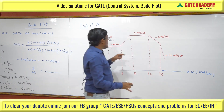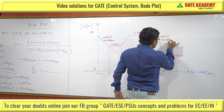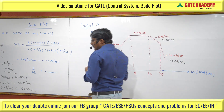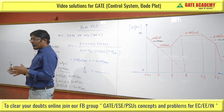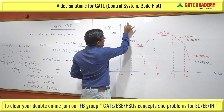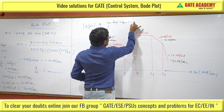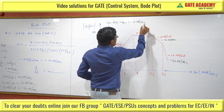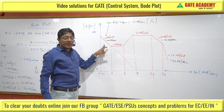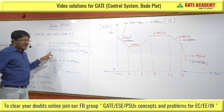So now: 0 dB per octave is flat; minus 6 dB per octave is minus 20 dB per decade; minus 12 dB per octave is minus 40 dB per decade. Once you have dB per octave, convert to dB per decade and proceed. The low frequency region shows minus 20 dB per decade, which represents one pole at origin. If it were minus 40, there would be two poles at origin.